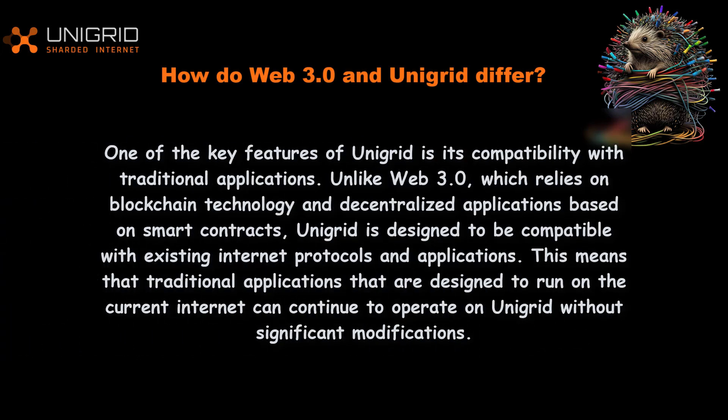One of the key features of Unigrid is its compatibility with traditional applications. Unlike Web 3.0, which relies on blockchain technology and decentralized applications based on smart contracts, Unigrid is designed to be compatible with existing internet protocols and applications. This means that traditional applications designed to run on the current internet can continue to operate on Unigrid without significant modifications.